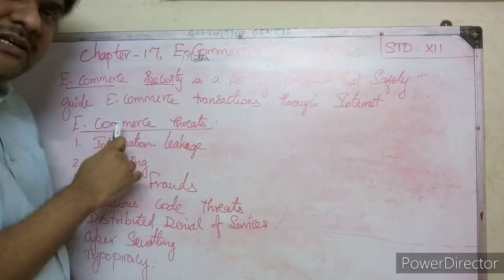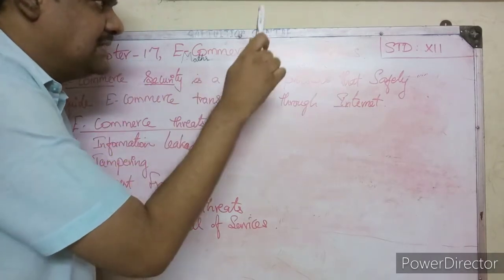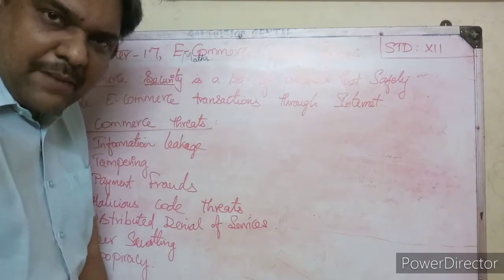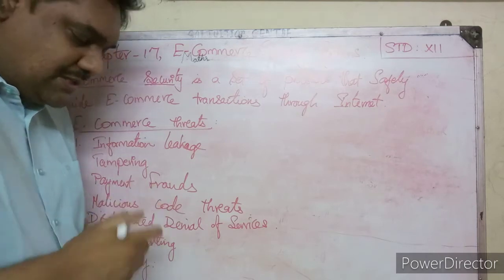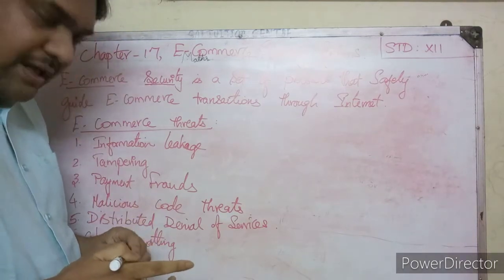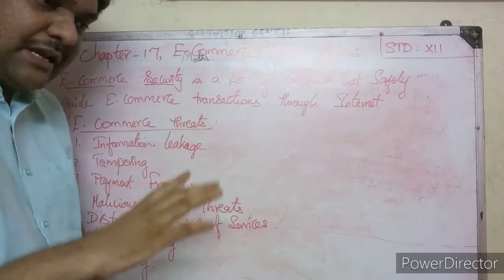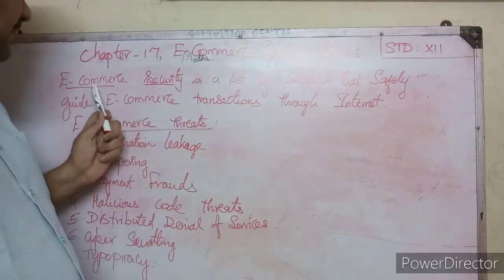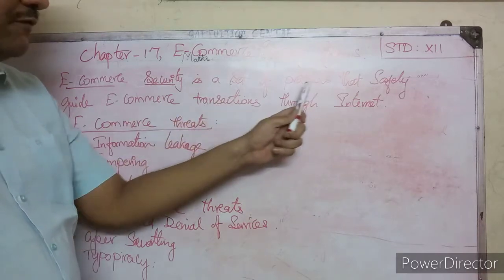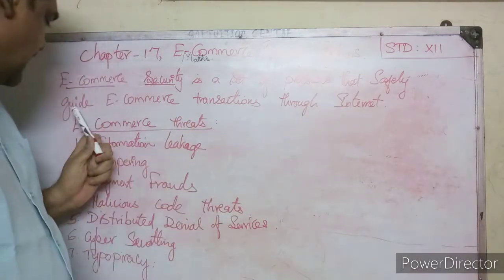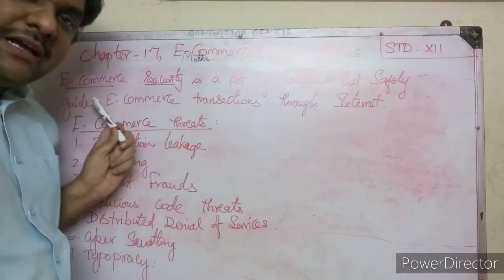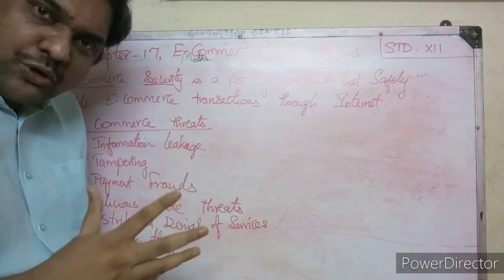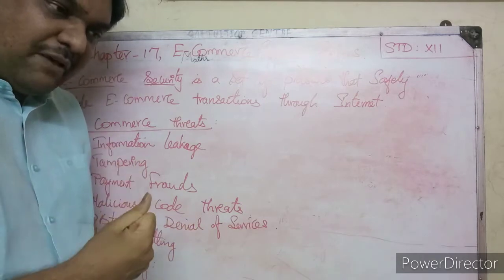Today we are going to see about a new chapter — Chapter 17: E-commerce Security System. The last chapter we covered electronic payment systems. In this chapter we will look at e-commerce security. E-commerce security is a set of protocols — that is, rules and regulations — that safely guide e-commerce transactions through the internet.